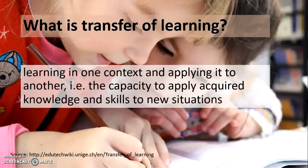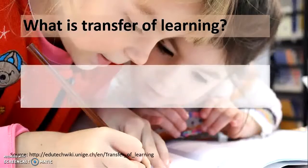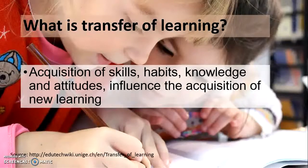Let us think about what transfer of learning actually is. Learning in one context and applying it to another context — that is, the capacity to apply acquired knowledge and skills to new situations — is basically known as transfer of learning. Some people are also of the opinion that acquisition of skills, habits, knowledge, and attitudes, when it influences the acquisition of new learning, is also known as transfer of learning.